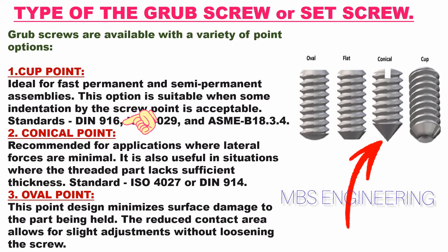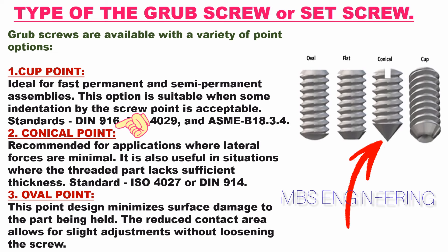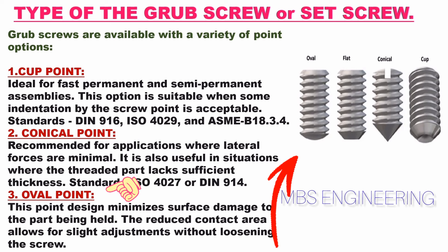Second, the conical point set screw: recommended for applications where lateral forces are minimal. It is also useful in situations where the threaded part lacks sufficient thickness. Its standard is as per ISO 4027 or DIN 914. Please refer to the picture of the conical point set screw for better understanding. Third, the oval point set screw: this point design minimizes surface damage to the part being held. The reduced contact area allows for slight adjustments without loosening the screw. Please refer to the picture of the oval point set screw for better understanding.